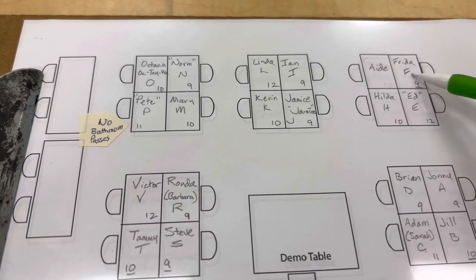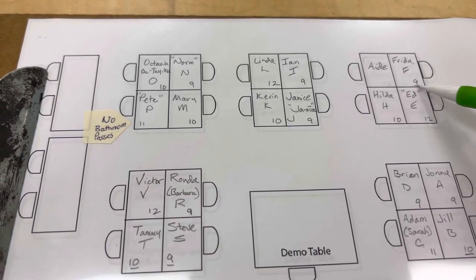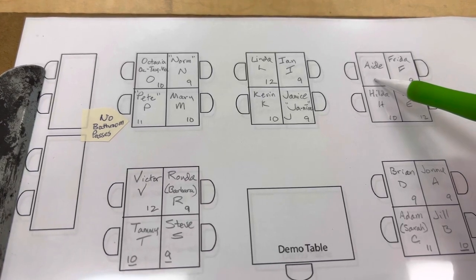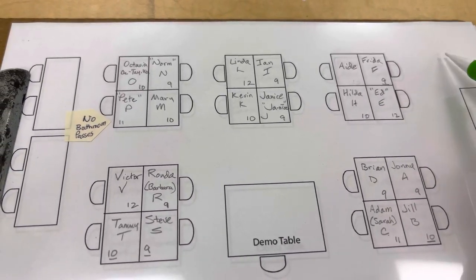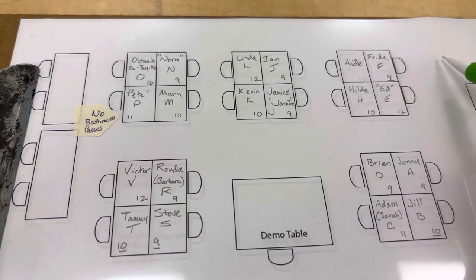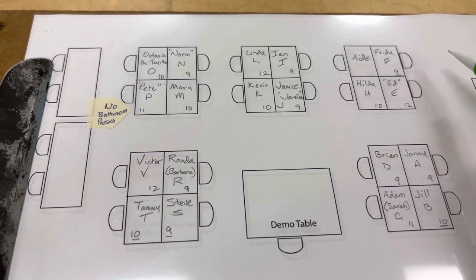The only exception is over here for Frida, a ninth grade student with an underline. She would be coming with an aide, and I put them closest to the door because Frida might need to exit with her wheelchair for medical reasons, so I give quicker access for that particular student.